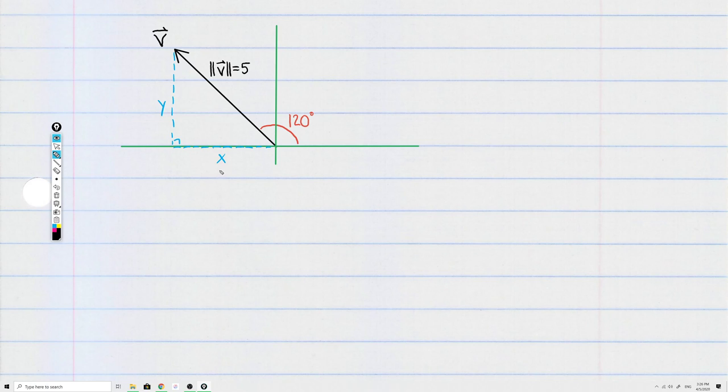So if I want to find the component x, we know that the cosine function is the adjacent over hypotenuse in a right triangle. So here we have the cosine of 120 is x over 5.